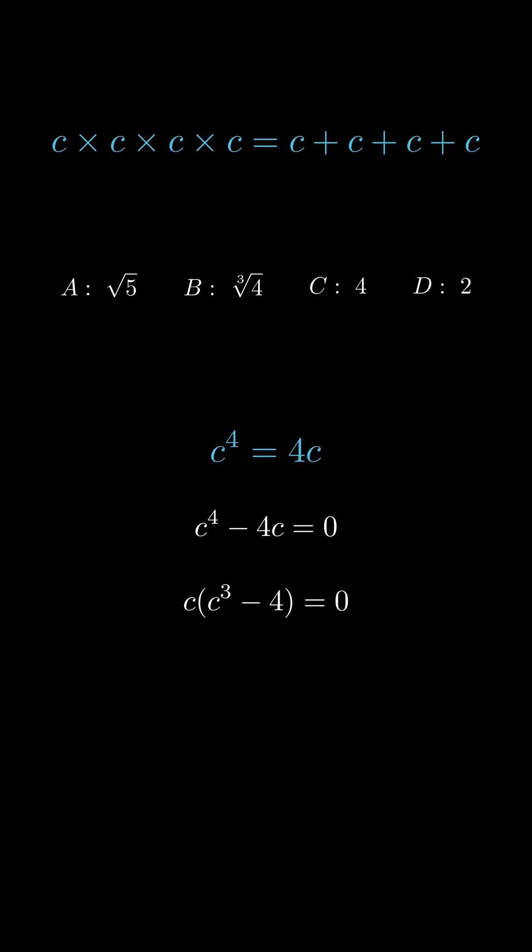So, either C equals 0 or C cubed equals 4. That means C equals the cube root of 4. Boom! The answer is option B.